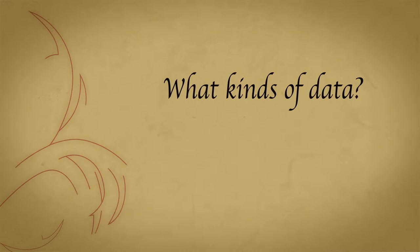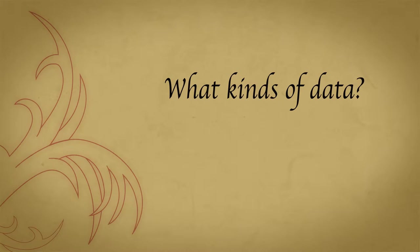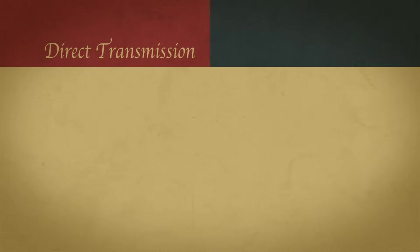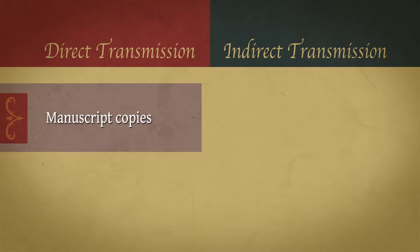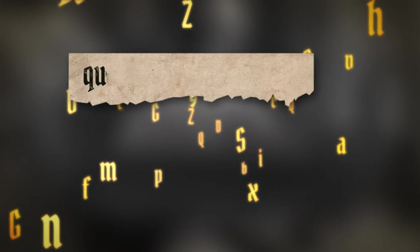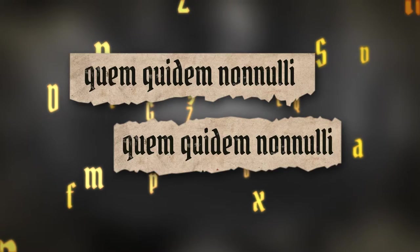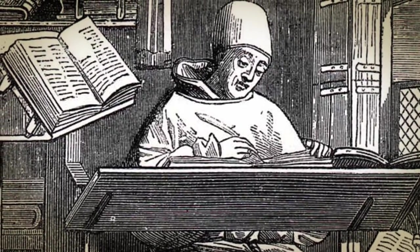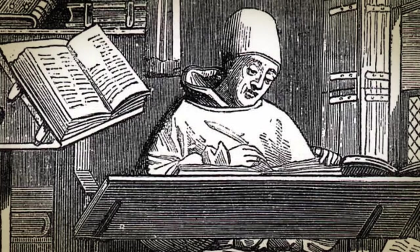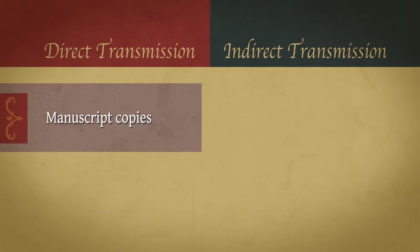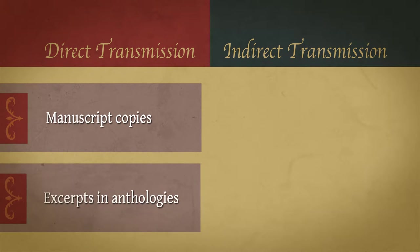So what kinds of data are involved in the apparatus criticus? Well, there are two kinds, basically, dependent upon direct and indirect transmission. In the first instance, there are manuscript copies that go toward making up the manuscript tradition — the tradition of texts that have been copied letter by letter, word by word, line by line, by mostly anonymous scribes over the course of the centuries. In the second instance, there are quotations and references in other texts, including excerpts in anthologies.